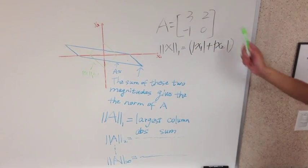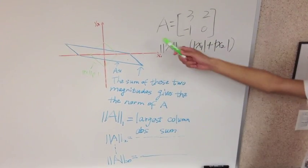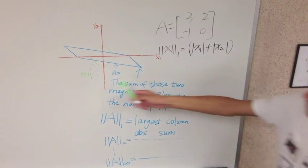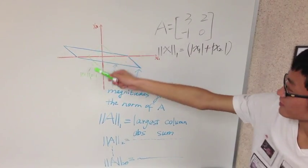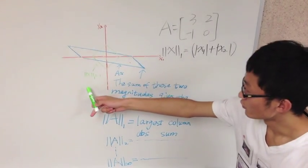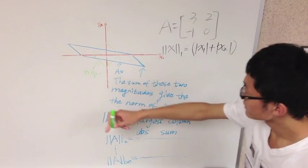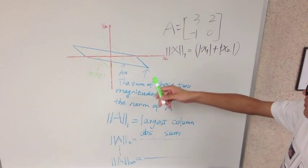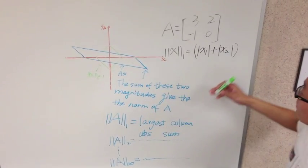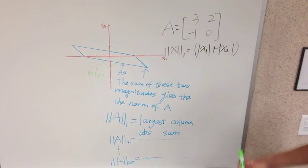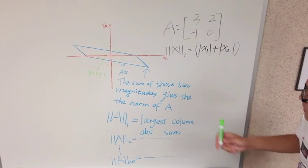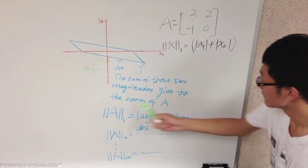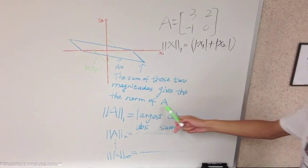Here's a matrix representation of the linear transformation A. And in this plot, the green lines are the representation of the original vector X. The blue lines are the representation of X which is transformed by the linear map A. So the sum of these two magnitudes here gives the norm of A.